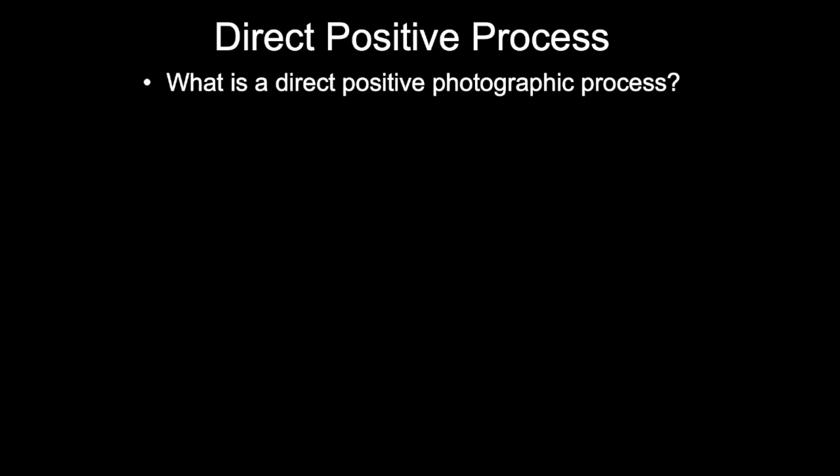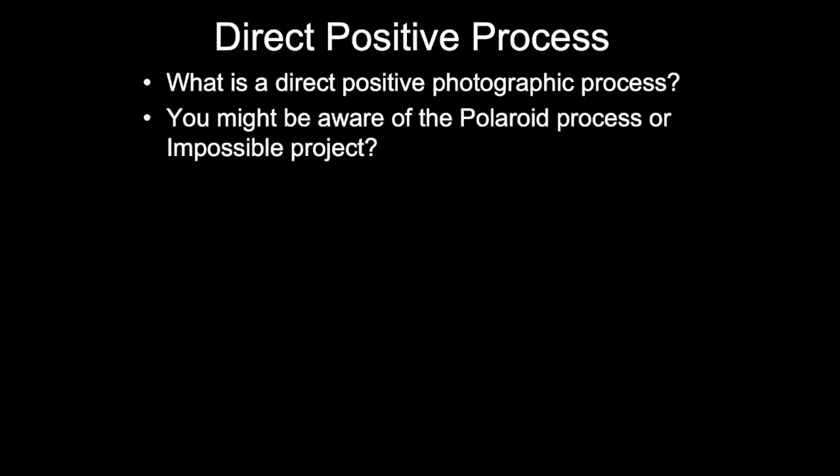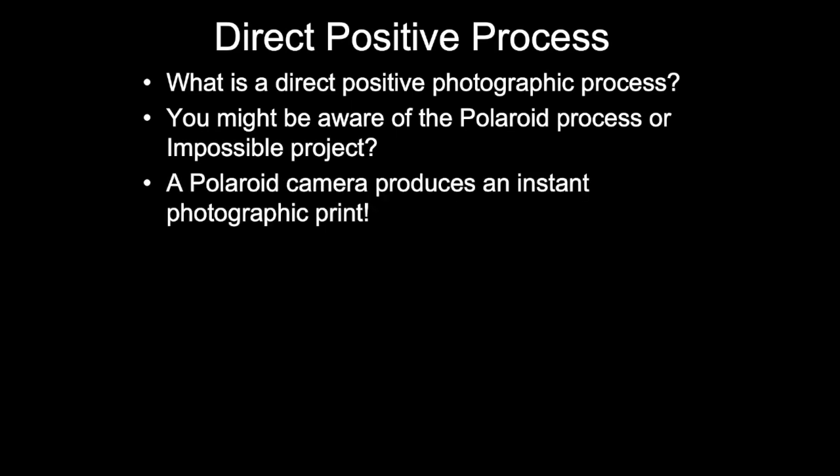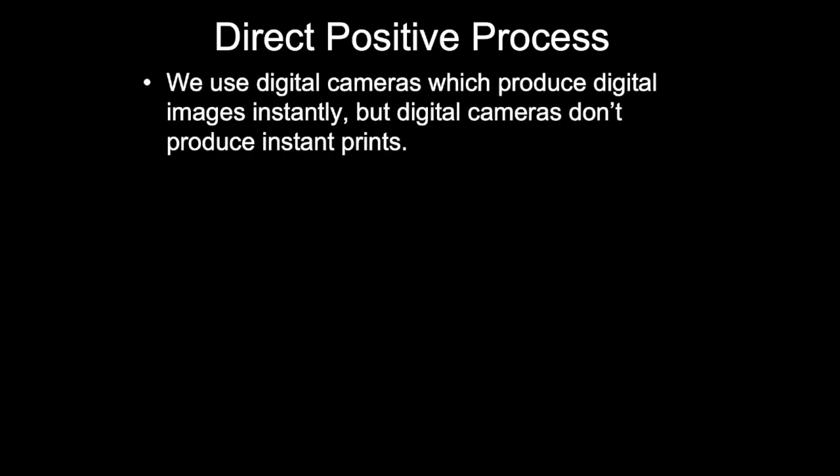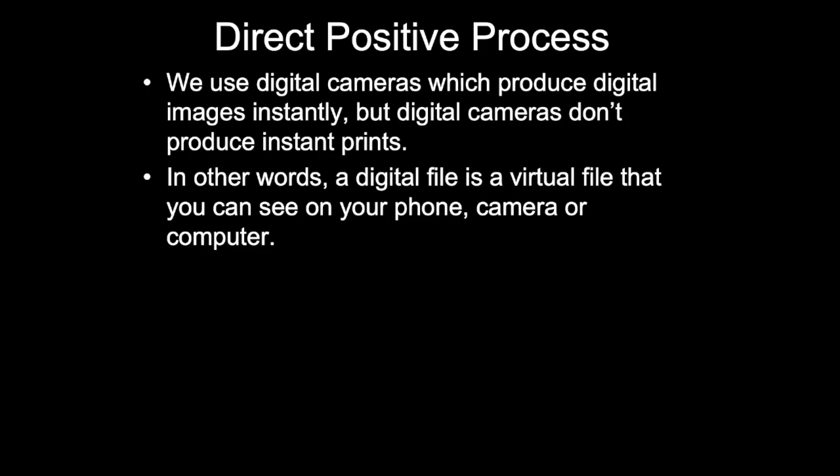What is a direct positive photographic process? You might be aware of the Polaroid process or the Impossible Project. A Polaroid camera produces an instant photographic print. We use digital cameras which produce digital images instantly, but digital cameras don't produce instant prints.